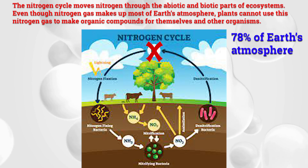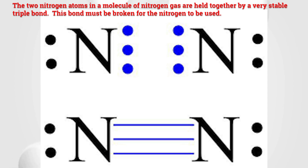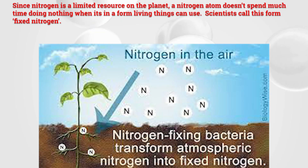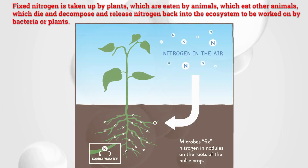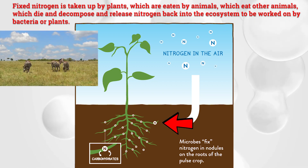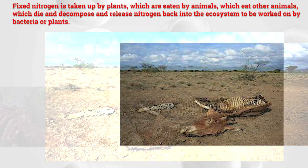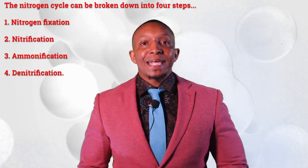Even though nitrogen gas makes up most of Earth's atmosphere, plants cannot use nitrogen gas to make organic compounds for themselves and other organisms. The two nitrogen atoms in a molecule of nitrogen gas are held together by a very stable triple bond, which must be broken for the nitrogen to be used. Since nitrogen is a limited resource, scientists call the usable form 'fixed nitrogen.' Fixed nitrogen is taken up by plants, eaten by animals, which die and decompose, releasing nitrogen back into the ecosystem. The nitrogen cycle can be broken down into four steps.